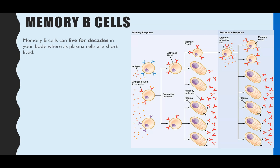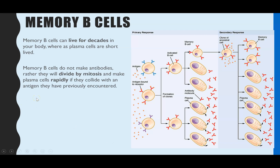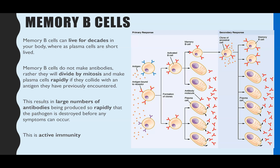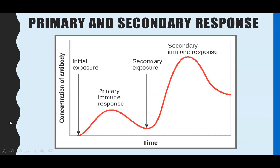The memory B cell stays in your blood for decades. If you are exposed to the pathogen you've been vaccinated for, your memory B cells will divide by mitosis and make lots and lots of plasma cells rapidly. This is the secondary response - the primary response is when you're exposed to the pathogen via the vaccine, and the secondary response is when you're exposed to it naturally. You have such rapid production of plasma cells and large quantities of antibodies so quickly that you don't actually get symptoms.